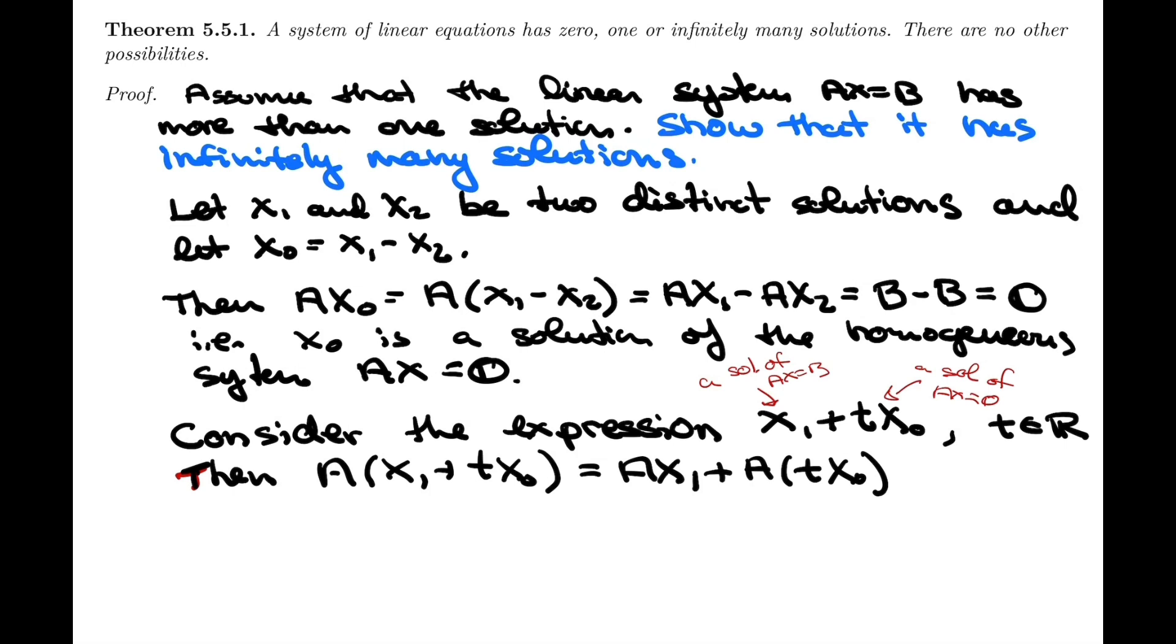T is a scalar, and so we know that instead of putting it in front of X0, we can place it in front of A, right? We can move it. And so I'm going to have AX1 plus T times AX0. But then we just saw that AX1 is B, because X1 is a solution of the system AX equals B. And AX0,